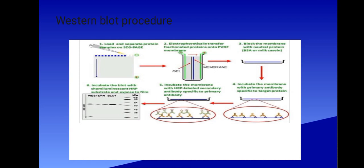Step number five: incubate the membrane with HRP-labeled secondary antibody specific to primary antibody.